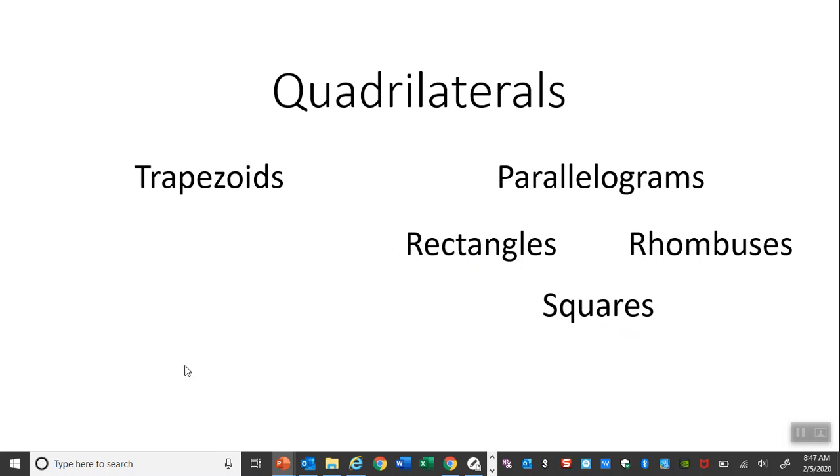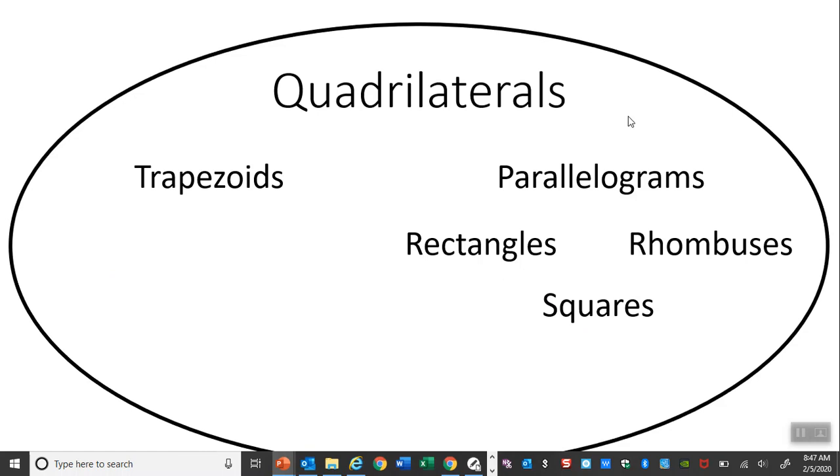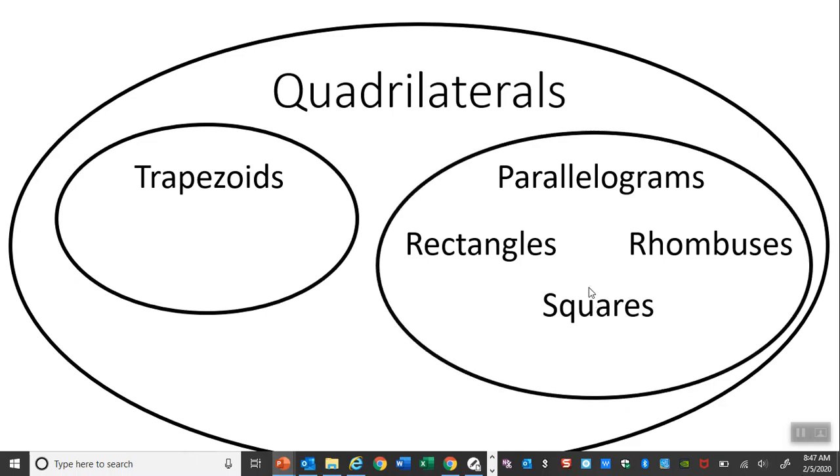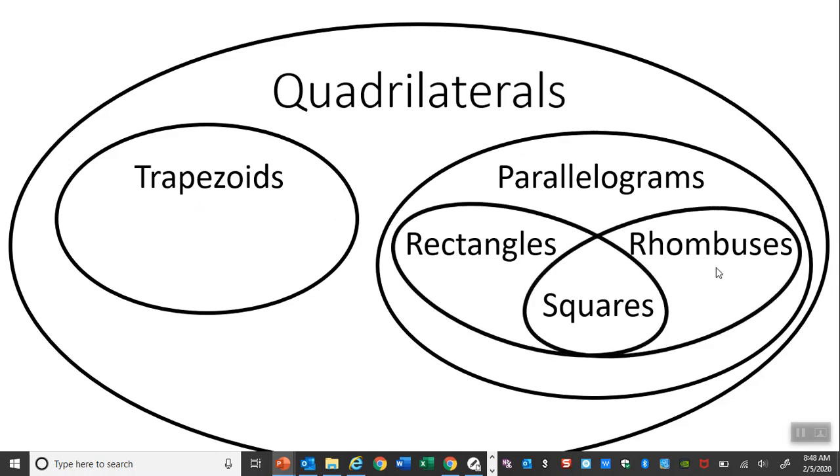So hopefully that's making sense. I'm going to also present this to you as a Venn diagram. So we have this Venn diagram here. All of these are quadrilaterals. And then you can break them into two subgroups, trapezoids and parallelograms. Now notice how these two subgroups do not overlap. There's nothing that's ever going to be a trapezoid and a parallelogram at the same time. And then you can also throw in these. So this visual is hopefully going to help with what we're about to get into.